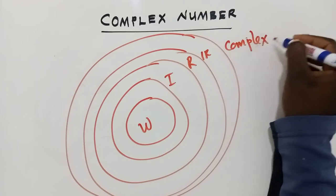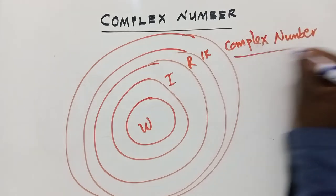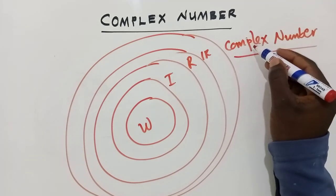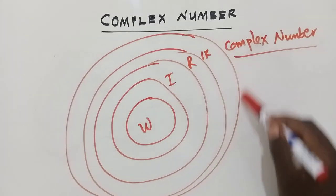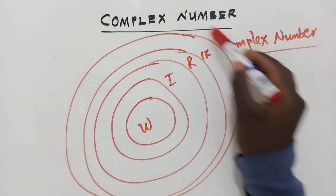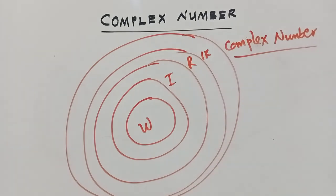So this is where complex numbers are found. Meaning these complex numbers swallow all these sets of numbers. So this is how it is. There is no other number which is beyond complex number. It's only complex numbers. All the numbers are found inside the complex number.